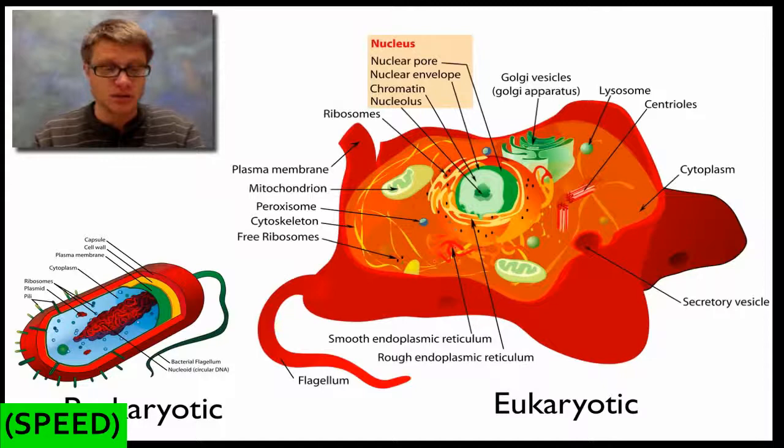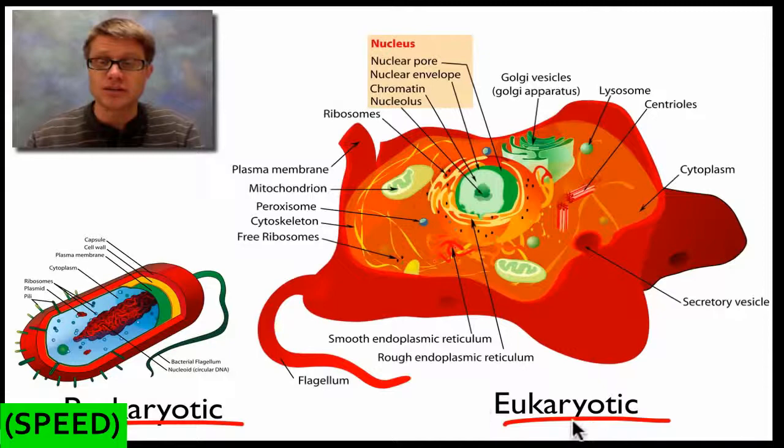First thing you should know is there are two major types of cells. We have what are called prokaryotic cells and then eukaryotic cells. Prokaryotic cells are going to lack a nucleus. They're before the egg, if we break down that word. So there's going to be no nucleus. Eukaryotic cells are going to have a nucleus.